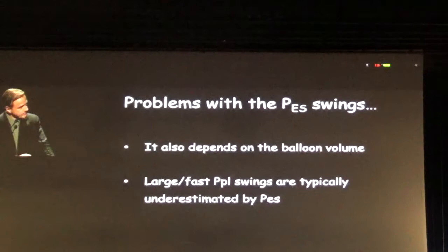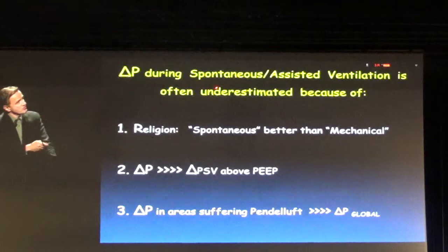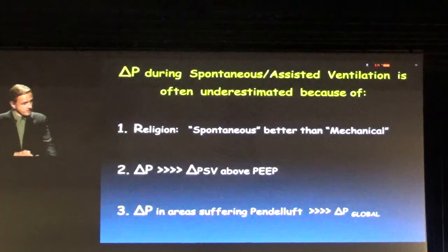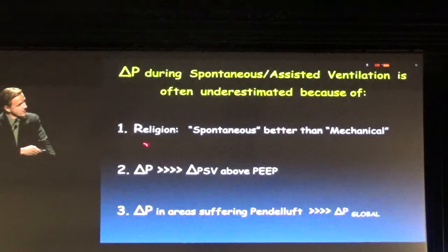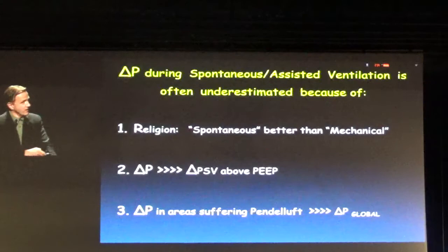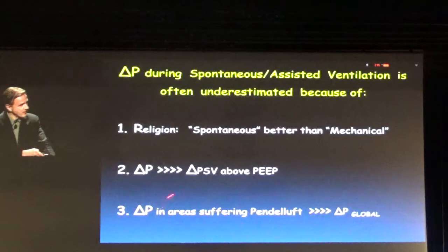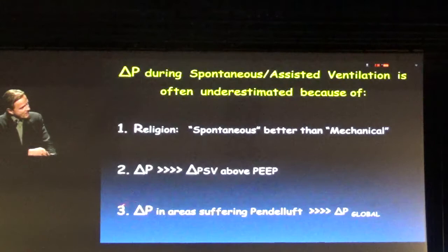The driving pressure during spontaneous ventilation is often underestimated for three main reasons. First, there is a kind of religion that spontaneous ventilation is much better than mechanical — this is just a religion. Second, people believe that the level of pressure support is your effective driving pressure, but when the patient is doing spontaneous effort the effective driving pressure can be much larger — the iceberg example. Third, when you have pendelluft and very quick contractions in a very heterogeneous lung, this is another reason for underestimation.